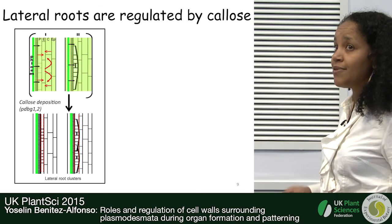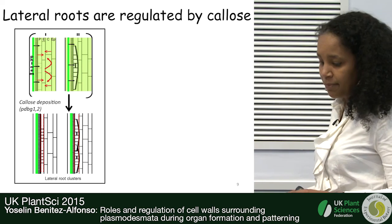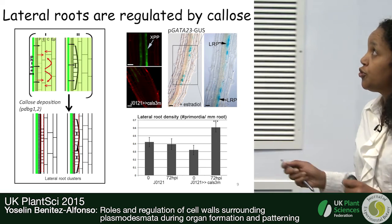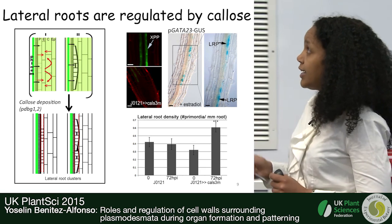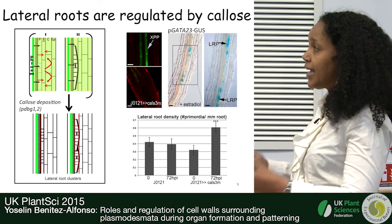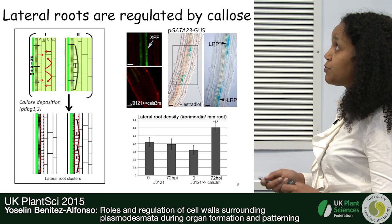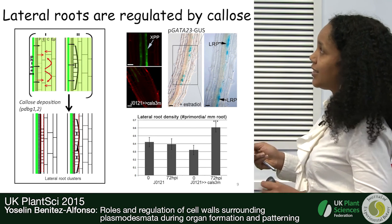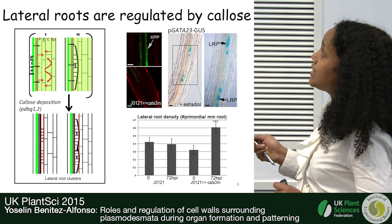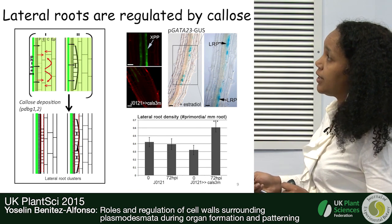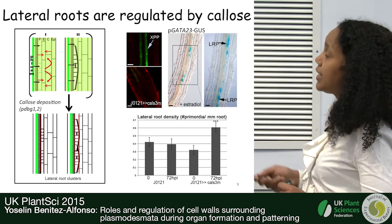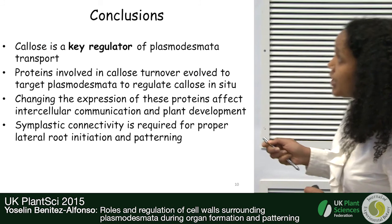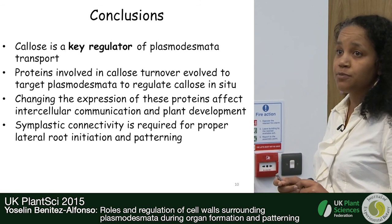Movement of a signal from the lateral root initiation site is probably necessary to determine the distance between lateral roots. In the mutants with increased callose deposition, this signal cannot move, resulting in distorted lateral root patterning. This was confirmed using another line — callose synthase 3, an activated version of a callose synthase, expressed under the promoter driving expression to the stellar pore pericycle in a transactivation fashion. This produced the same clustering phenotype. We can conclude that callose is a key regulator of Plasmodesmata transport.